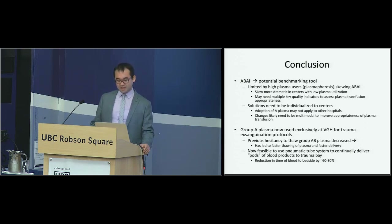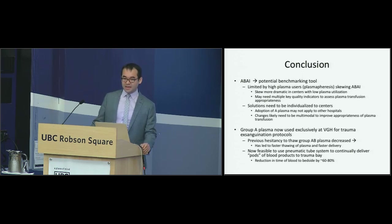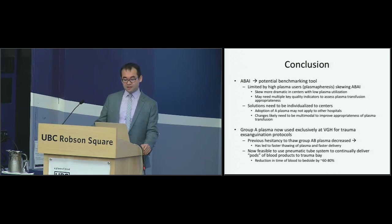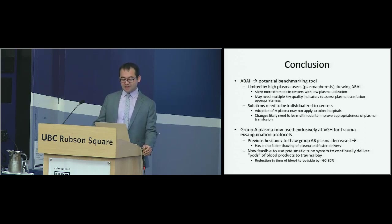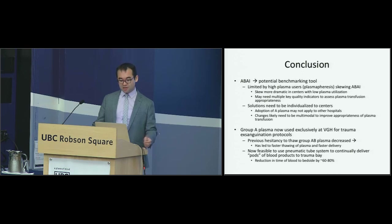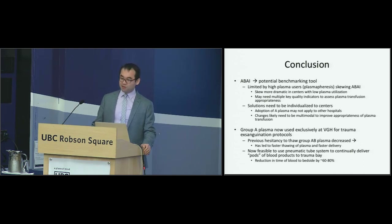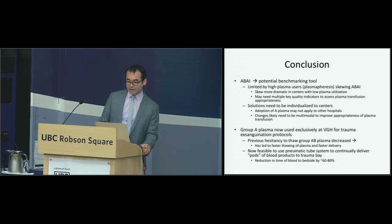Solutions really need to be individualized to centers. Adoption of A Plasma may not apply to other hospitals and is not a panacea. Education and engaging the prescriber is probably where you get the most bang for your buck, and changes need to be multimodal. Group A Plasma is now used exclusively at VGH for trauma exsanguination protocols, and the previous hesitancy to thaw Group AB Plasma — seen as a rare resource — has decreased. This has led to faster thawing and faster delivery, making it feasible to use a pneumatic tube system to deliver pods of blood products to the trauma bay. We trialed this in two code orange simulations and in real life, finding the reduction in time for blood to reach the bedside has gone down by about 60 to 80%.